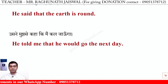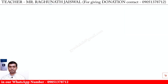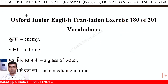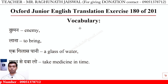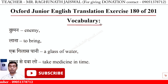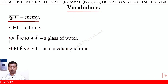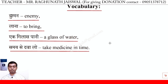Vocabulary for Oxford Junior English Translation Exercise 180 of 201: दुश्मन — Enemy. लाना — To bring. एक गिलास पानी — A glass of water. समय से दवा लो — Take medicine in time.